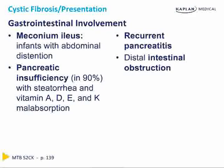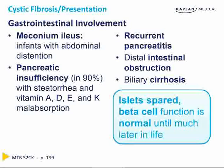Recurrent pancreatitis, distal intestinal obstruction, and biliary cirrhosis resulting from inability to move bile through the bile ducts are also complications. Importantly, in the pancreas the islet cells are often spared and beta cell function will remain normal. However, some patients develop diabetes — not from direct destruction of beta cells by CF, but from recurrent pancreatitis that over time spreads and affects the endocrine portion of the pancreas through repeated episodes of inflammation.